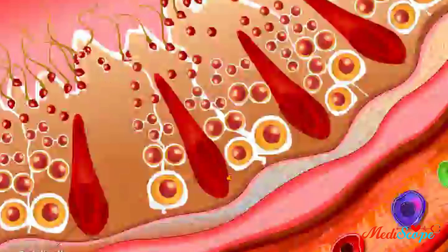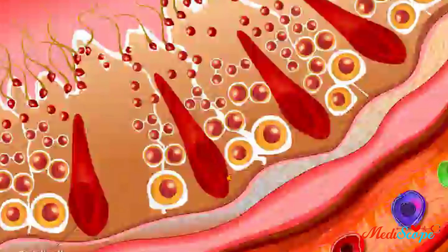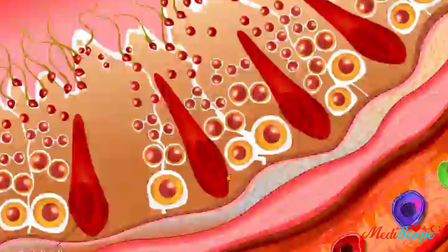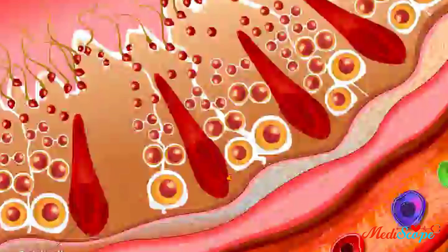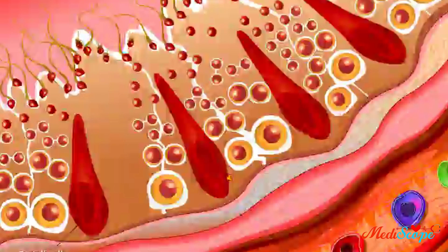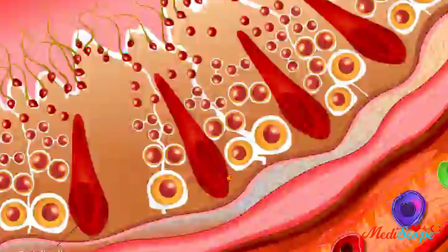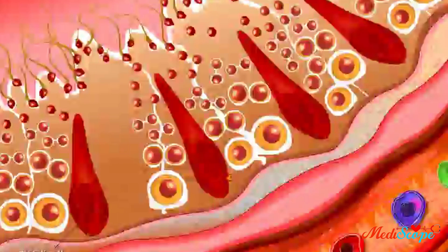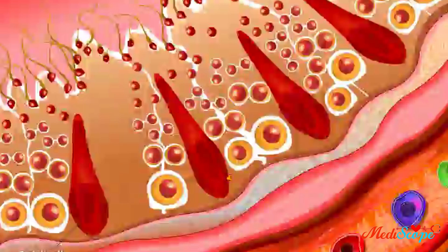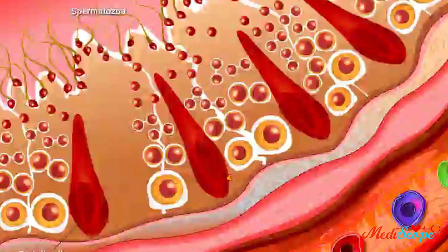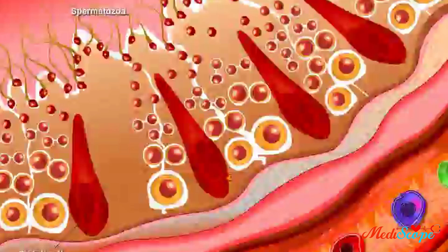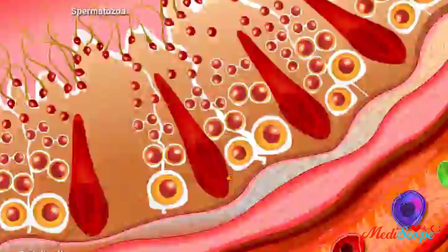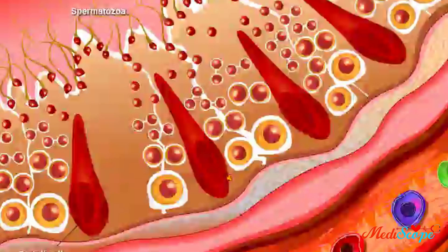These spermatids migrate towards the lumen of the seminiferous tubule. During spermiogenesis, spermatids undergo a dramatic change in form. They evolve from round cells into sperm-like spermatozoa which are ready for fertilization.